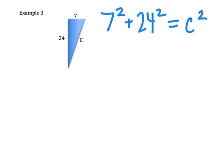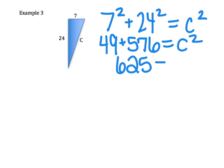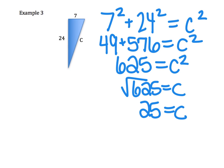Well, 7 squared is 49, plus 24 squared is 576, and that equals C squared. Then I have 49 plus 576, that gives me 625, equal to C squared. So to find C, I just have to find the square root of 625, and that is 25. So my hypotenuse on this triangle is 25 units.